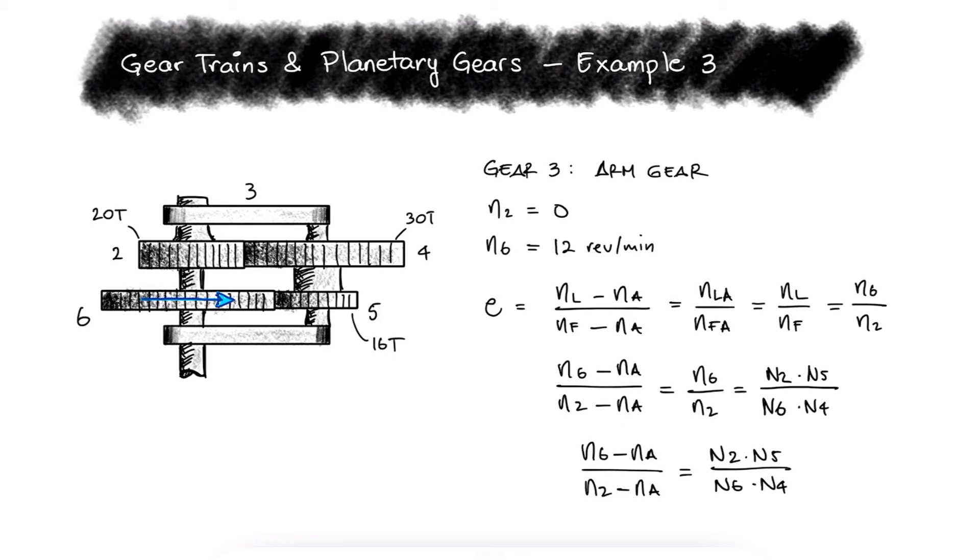The only value we're missing from this expression is the number of teeth of gear 6. But since we know that the distance between the shafts can be defined in terms of the diameters of gears 2 and 4, or in terms of the diameters of gears 6 and 5, and we know that the diameters are directly proportional to the number of teeth, we find that gear 6 has 34 teeth.